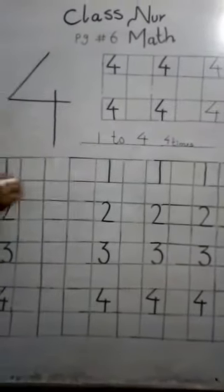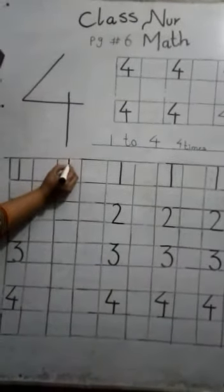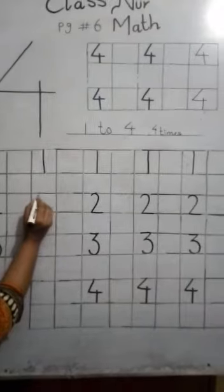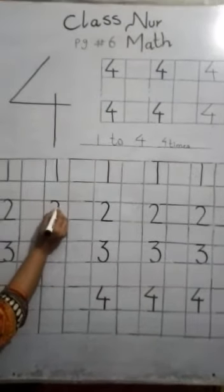One to four, four times. Write with me: one, write one four times. Write one four times. Write two, write two.